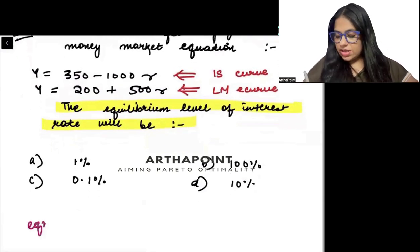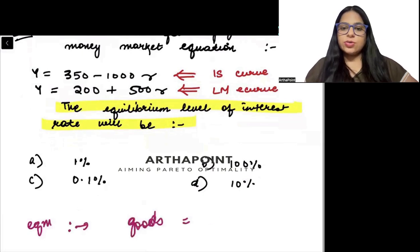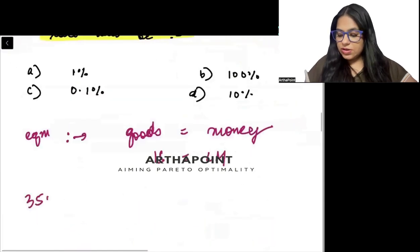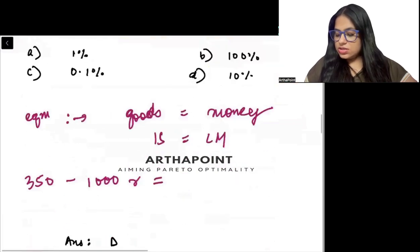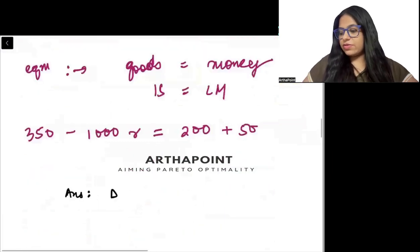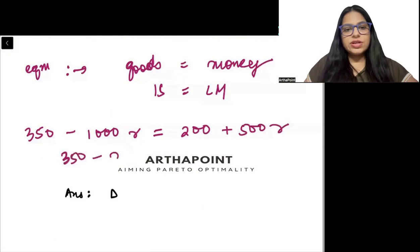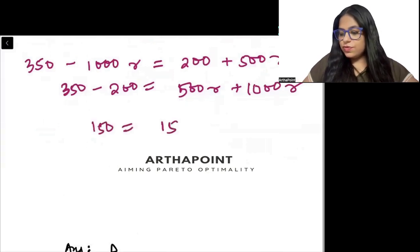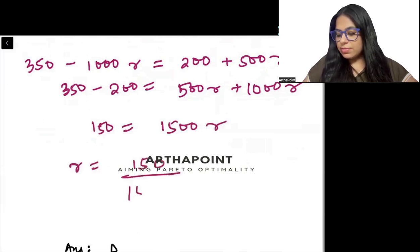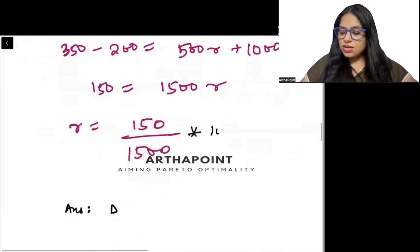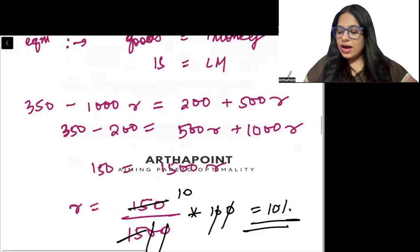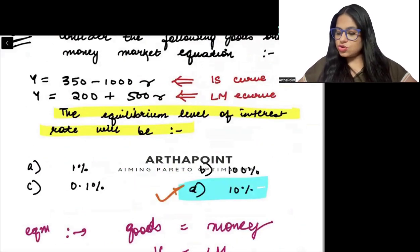So beta, how do we find equilibrium? We find equilibrium by equating the goods market equation to the money market equation by equating the IS curve to the LM curve. So what will I get beta? 350 minus 1000R is equal to 200 plus 500R. So let's try to solve this. So 350 minus 200 will be 500R plus 1000R. So what will I get from here beta? 150 is equal to 1500R. So R will be 150 divided by 1500. And beta, if I have to convert this in percentage, multiply by 100. So if I just multiply this by 100, I will get the answer as 10%. So R in this case would be 10%. The correct answer to this question will be D.